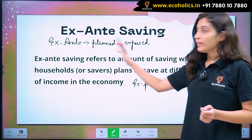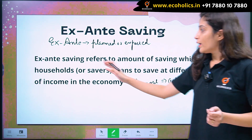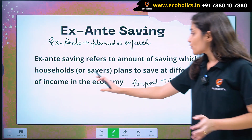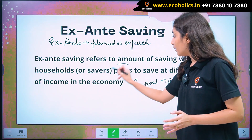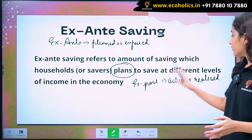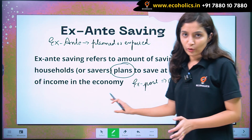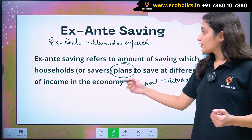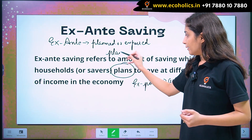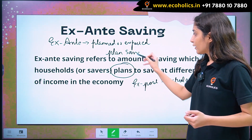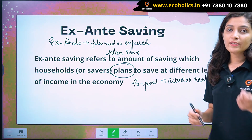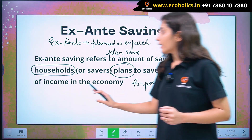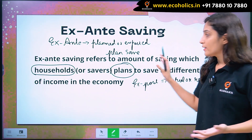Coming on to ex-ante savings. Ex-ante savings refers to the amount of saving which the households or savers plan to save at different levels of income in the economy. So basically, ex-ante savings is planned savings — how much people plan to save.